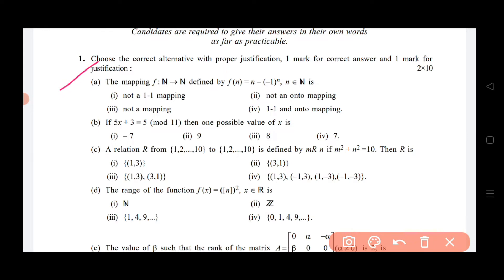Choose the correct alternative with proper justification. One mark for correct answer and one mark for justification. So you have one mark for correct answer, meaning 2 marks per question, 2 into 10.